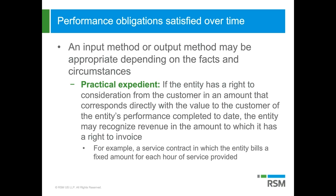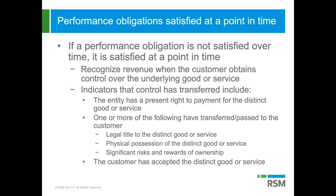If a performance obligation is not satisfied over time, then it's satisfied at a point in time. In those cases, you recognize revenue when the customer gets or gains control of the underlying good or service. Indicators that control has transferred include: the entity has a present right to payment; legal title, physical possession, and significant risks and rewards of ownership have passed to the customer; and the customer has accepted the distinct good or service.